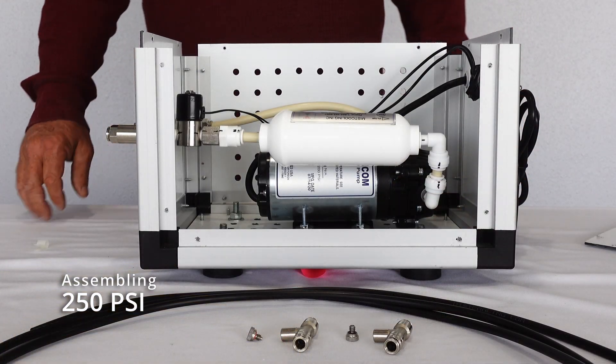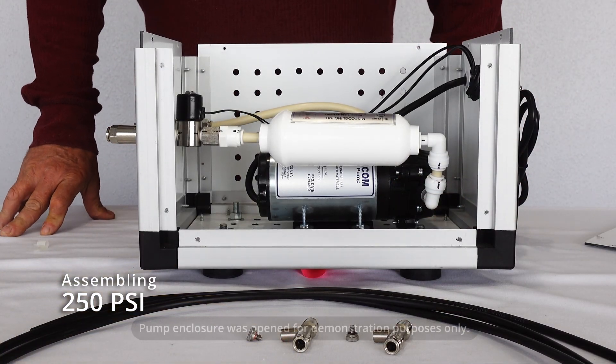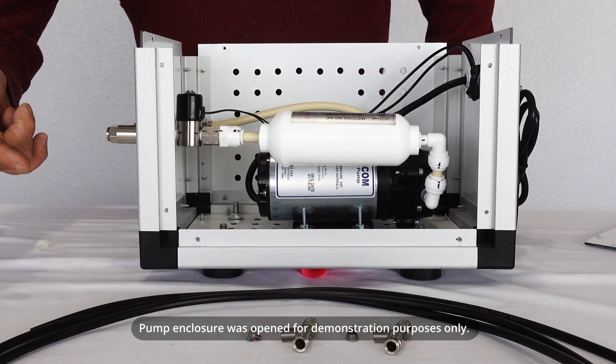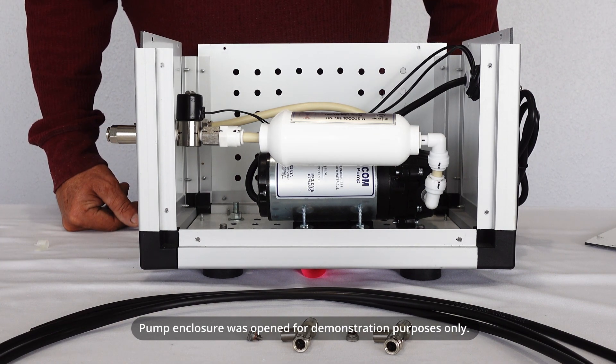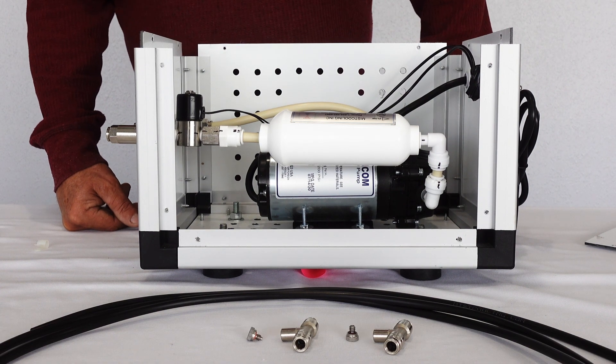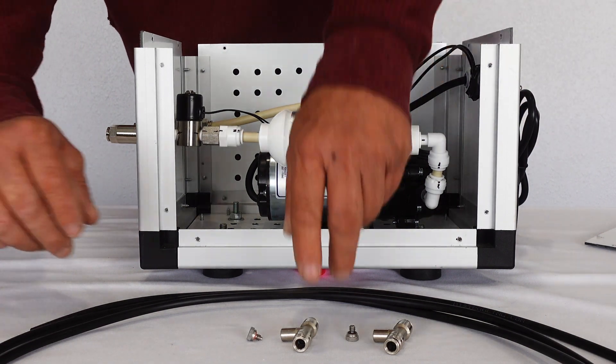This is how to assemble your misting system. We have black tubing here but in your case you probably have beige, but this is just for demonstration purposes.